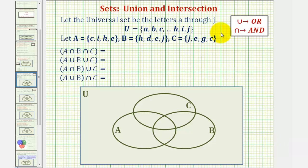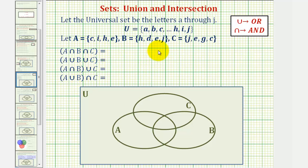In this example, we're given the universal set contains the lowercase letters A through J, and sets A, B, and C are subsets. We want to give the elements in each of these sets. Let's do this using a Venn diagram.